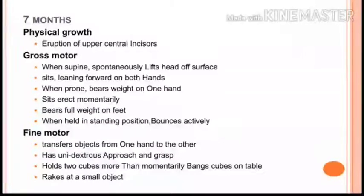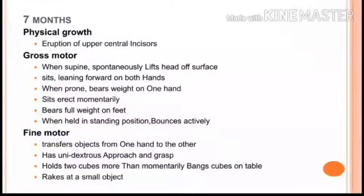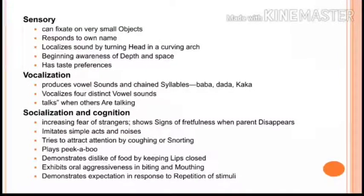At seven months, the baby holds two cubes more than momentarily and rakes at a small object. In sensory development, they can fixate on very small objects, respond to their own name, localize sounds by turning the head in a curving arch even when the sound is made some distance away, and show taste preferences.